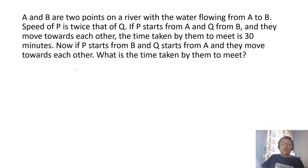A and B are two points on a river with the water flowing from A to B. Speed of P is twice that of Q. P starts from A and Q starts from B and they move towards each other. So speed of P is 2x and speed of Q is x. Time taken for them to meet is 30 minutes.